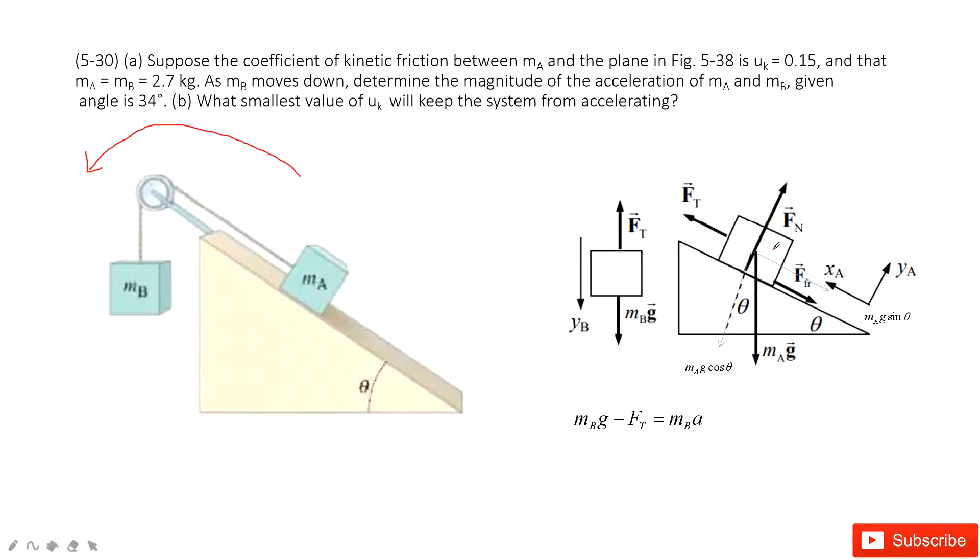Then look at object A. We have the y-component; acceleration is zero. So normal force minus m_A g cos θ equals zero. And then we look at the x-component,